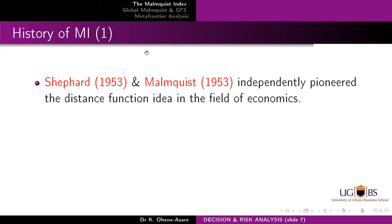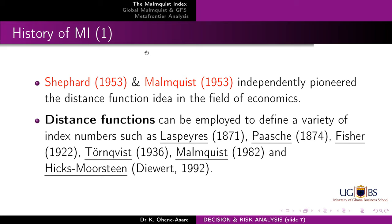What I'm going to do now is give you a bit of history about the Malmquist Index. It was pioneered by Shephard in 1953 and Malmquist in 1953 — they were doing their work separately. While one was doing it in the world of distance functions, the other was doing it in the world of quantity indices, while the other was doing it in the world of price indices. Distance functions — we can use distance functions in a number of ways. The Laspeyres in 1871 uses distance functions. The Hicks-Moorsteen Index by Diewert 1992 uses distance functions.